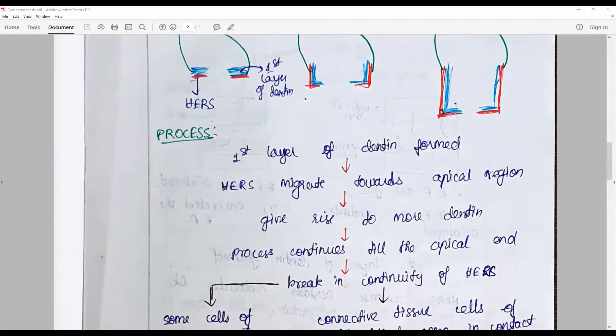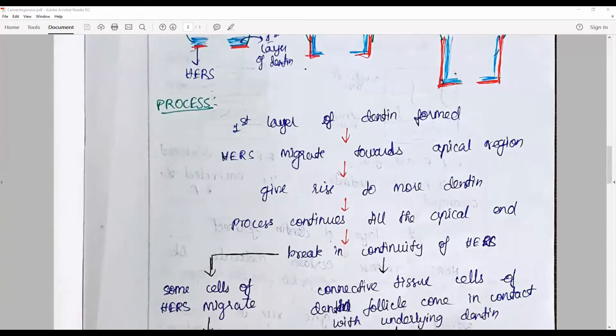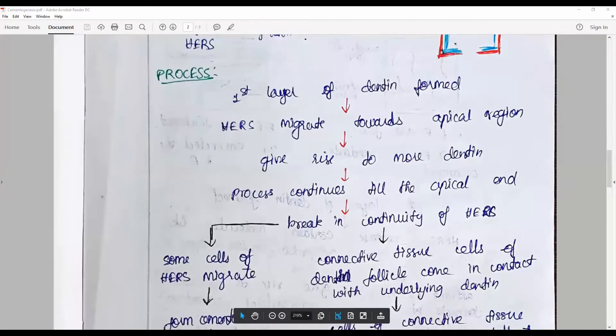In this process, certain areas of invagination, if it is a multi-rooted tooth with two or three roots, lead to formation of cervical constrictions in the loops. At this point, the HERS subsequently undergoes certain areas of breakage by apoptosis.